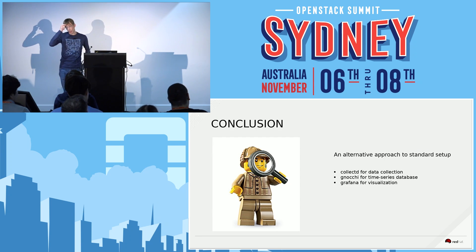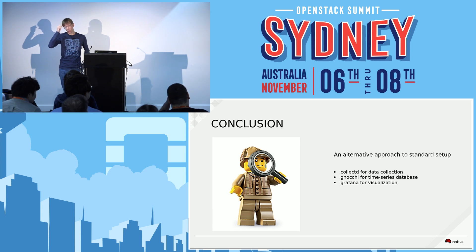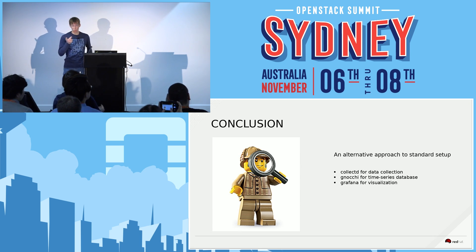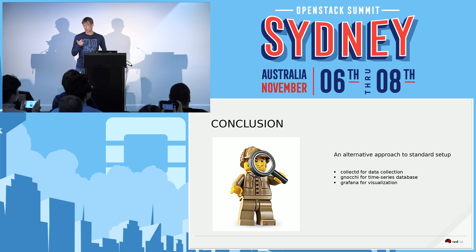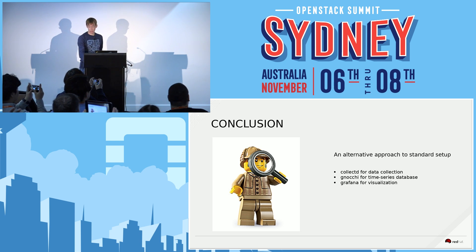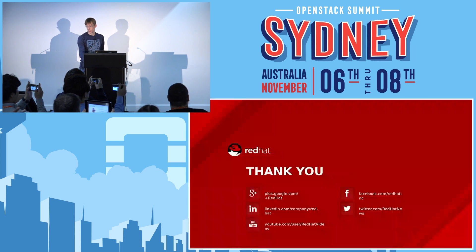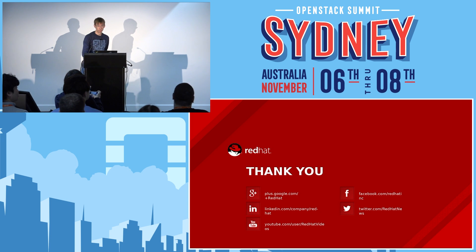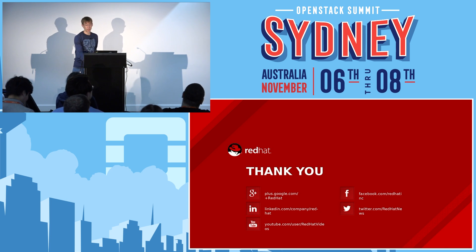So what I'm preferring currently is Collectd for data collection, Gnocchi for the time series database, and Grafana for the visualization. That's it. Thank you. Any questions?